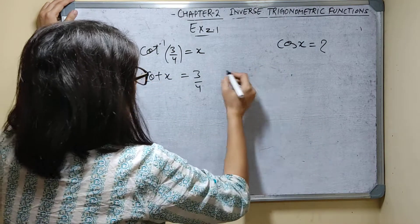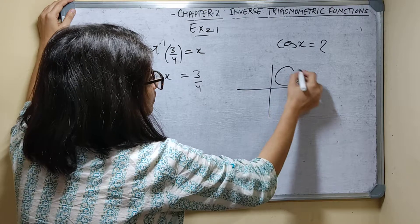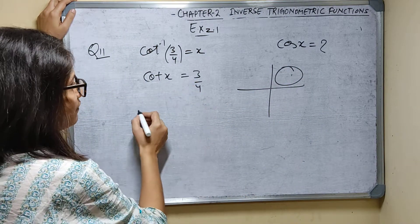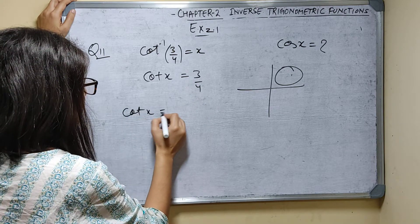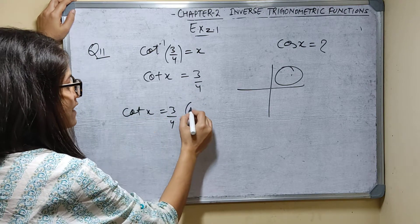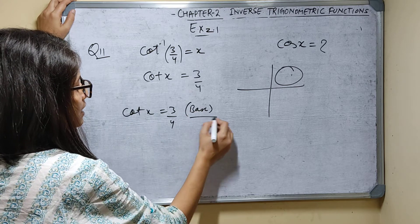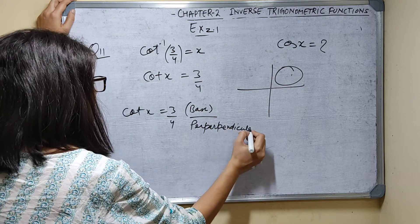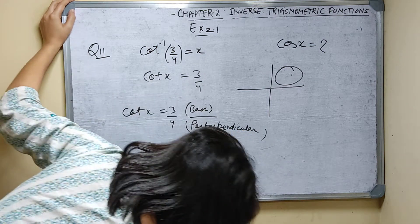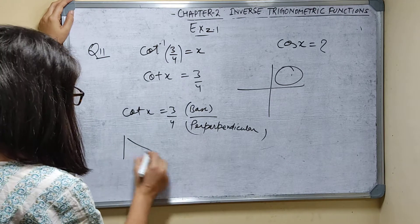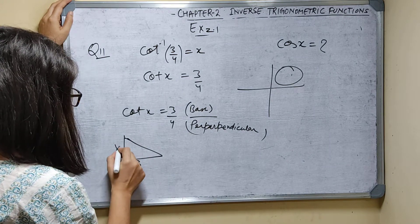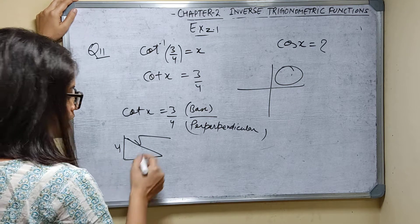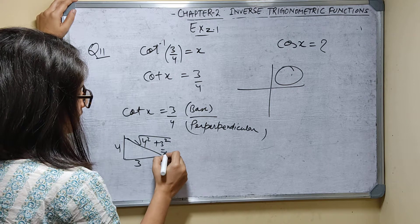The value is positive, and in the first quadrant it is positive. So cot x is equal to 3 by 4, which is base by perpendicular. So base is 3, perpendicular is 4. The hypotenuse is root of 4 squared plus 3 squared — that is 16 plus 9 — which equals 25, so hypotenuse is 5.